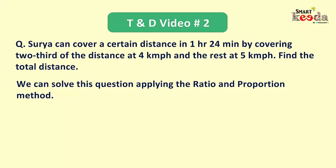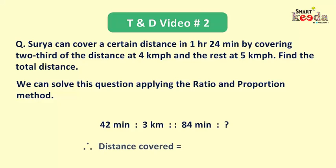We can solve this question further by applying the ratio and proportion method. We have found that if 42 minutes are taken, the distance covered is 3 km. The actual time given in the question is 1 hour 24 minutes, or 84 minutes. So the actual distance covered equals 84 times 3 divided by 42, which gives us 6 km, and that's the answer.